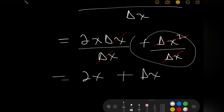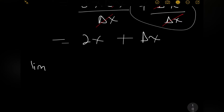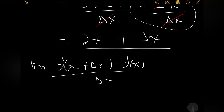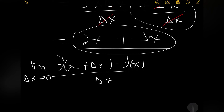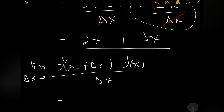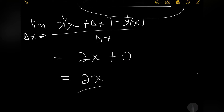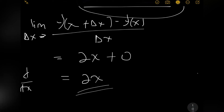Our fourth and final step in first principles is to find the limit. We find the limit of f of x plus delta x minus f of x, divided by delta x, as delta x approaches 0. So we plug in 0 for delta x, giving us 2x plus 0, which is 2x. So the derivative of x squared is equal to 2x.